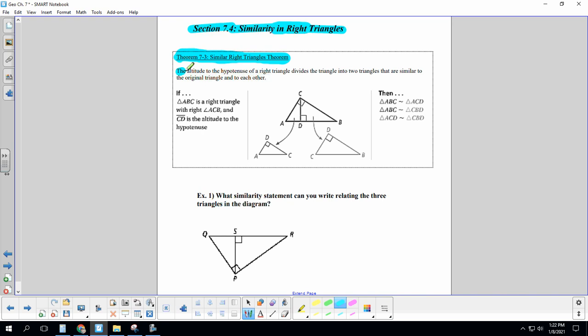So we are first going to talk about Theorem 7-3, Similar Right Triangles Theorem. The altitude to the hypotenuse of a right triangle divides the triangles into two triangles that are similar to the original triangle and to each other.